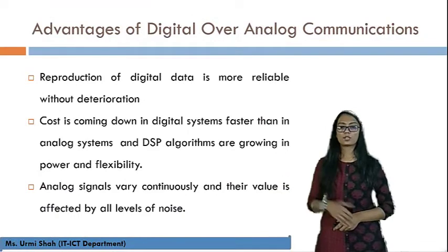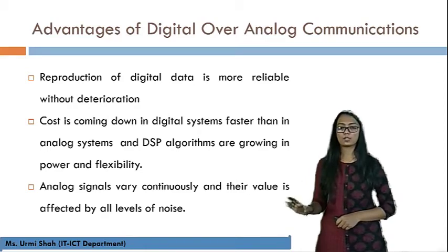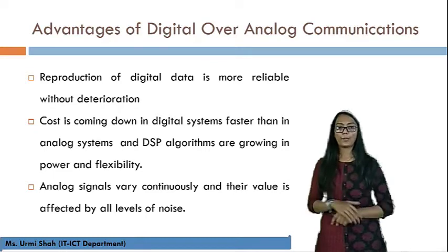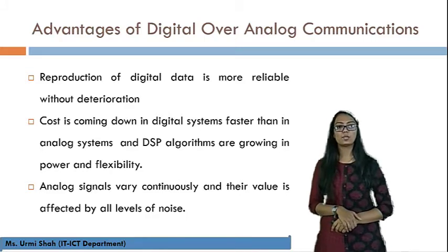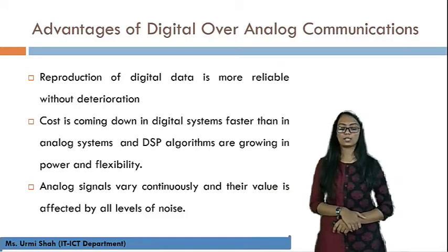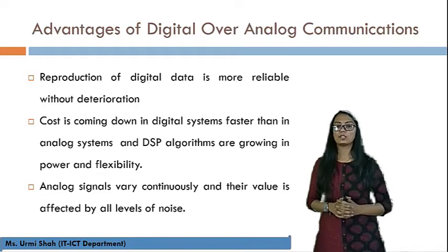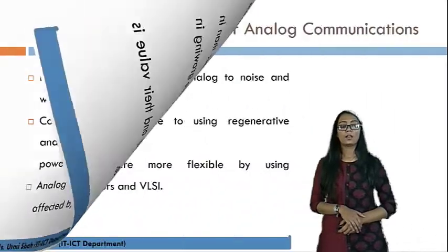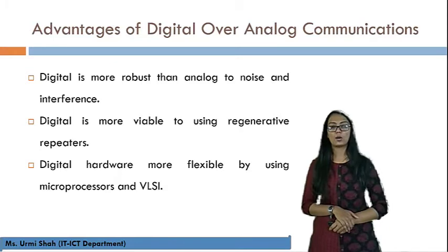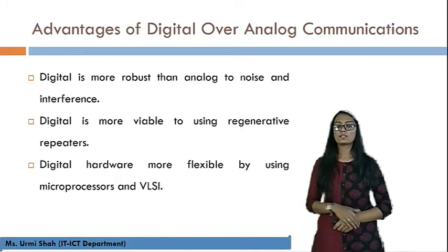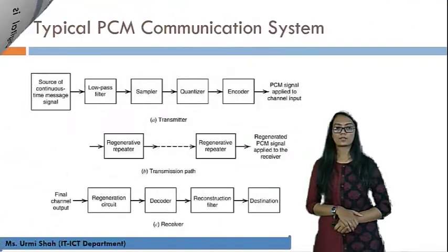Reproduction of digital data is more reliable without deterioration — without any disturbance or false impact. Cost is coming down in digital systems faster than in analog systems, and DSP algorithms are growing in power and flexibility. Analog signals may vary continuously and their value is affected by all levels of noise. To summarize: Digital is more robust than Analog to noise and interference, viable with regenerative repeaters, and its hardware is flexible using microprocessors and VLSI.